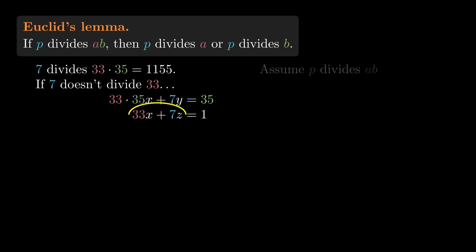If we look at this equation, any common divisor of 33 and 7 would also divide 1. So for this equation to have a solution, 33 and 7 must have no common divisor greater than 1.